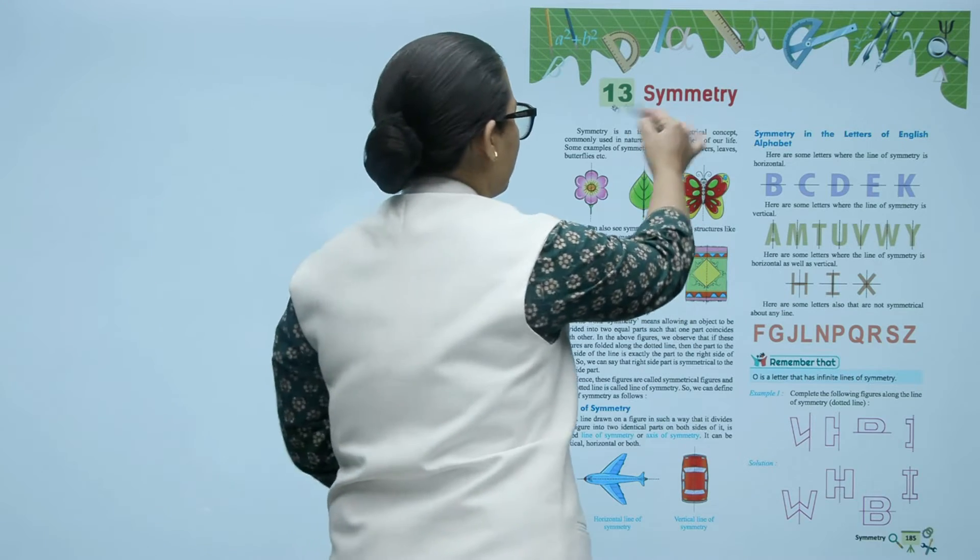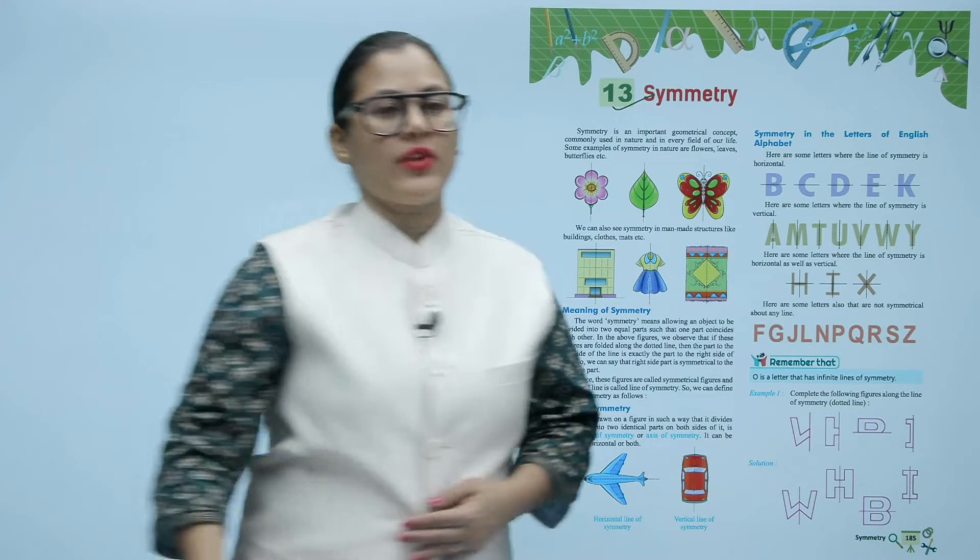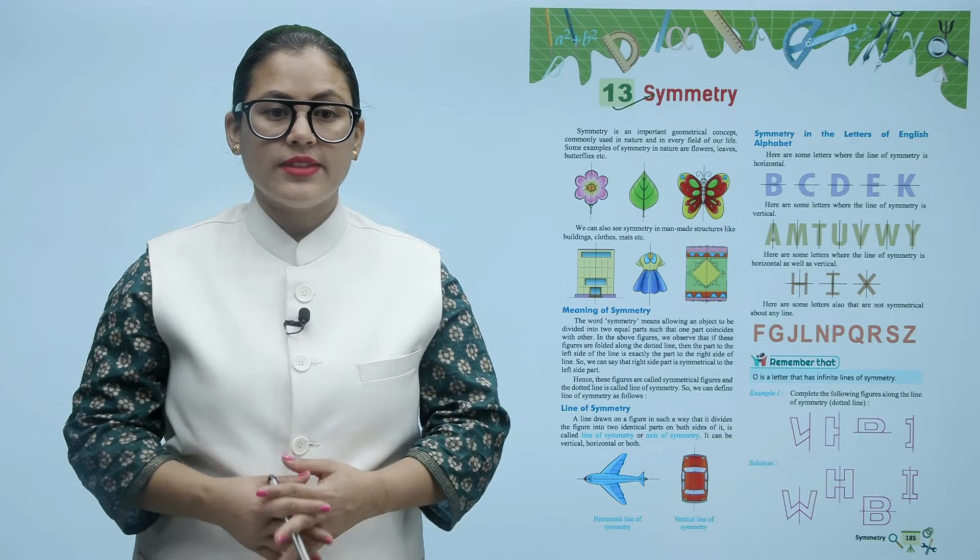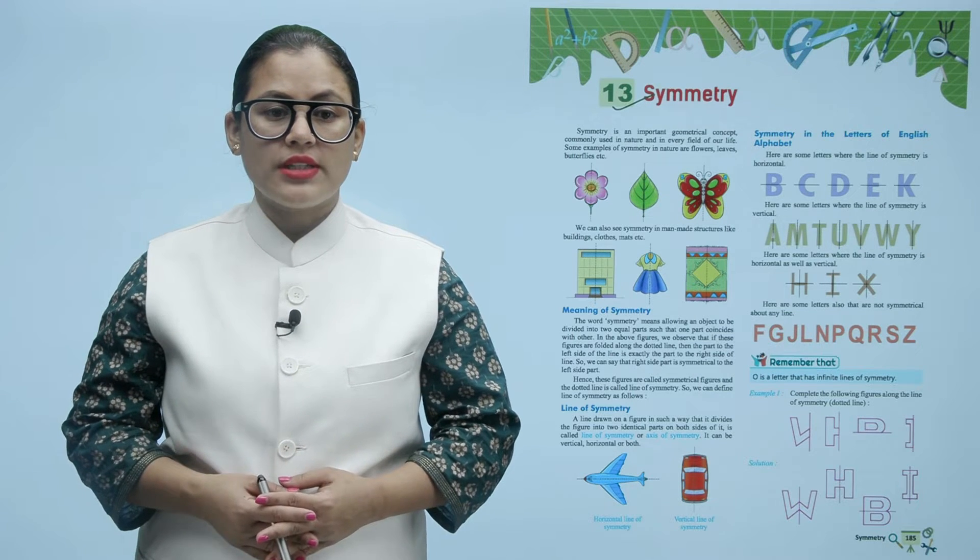Hello children, I hope you all are doing good. Let's start today's chapter: Symmetry. Symmetry is an important geometrical concept commonly used in nature and in every field of our life. Some examples of symmetry in nature are flowers, leaves, butterflies, etc. We can also see symmetry in man-made structures like buildings, clothes, mats, etc.